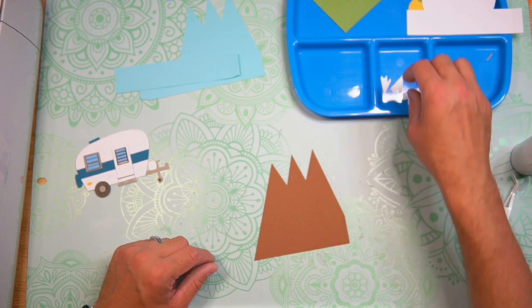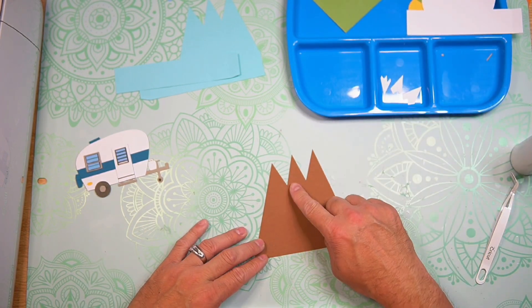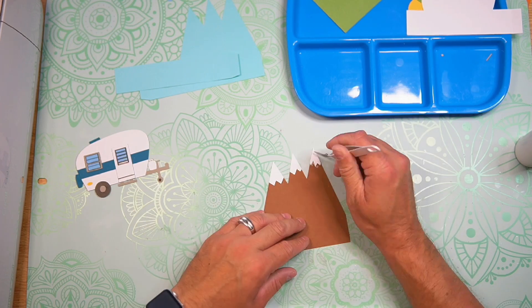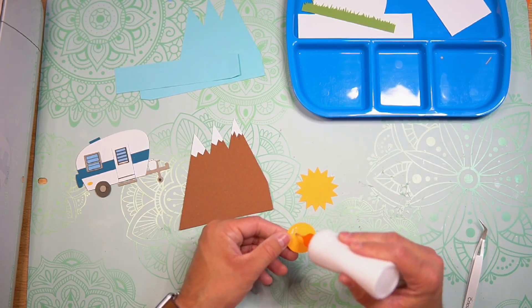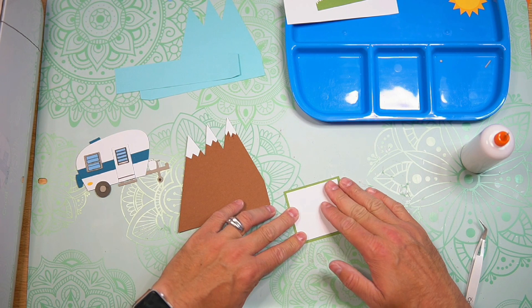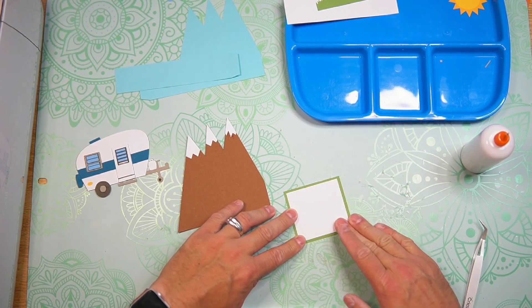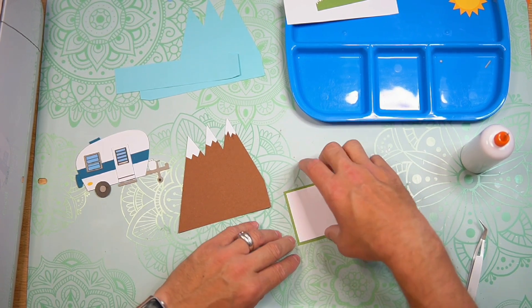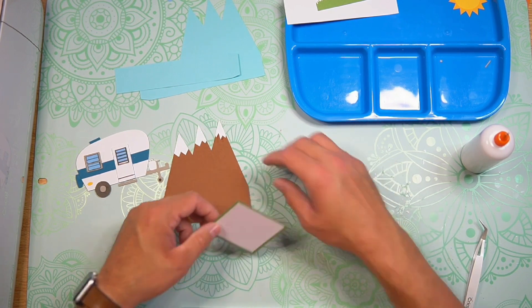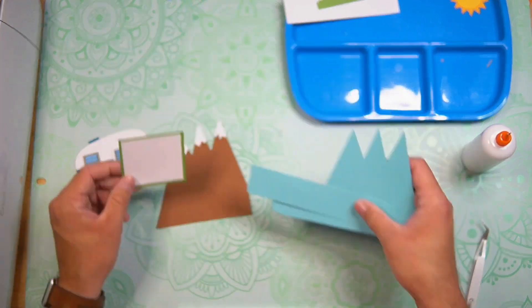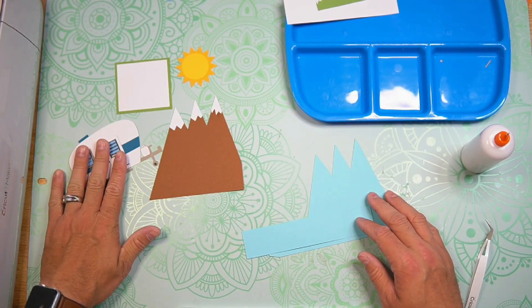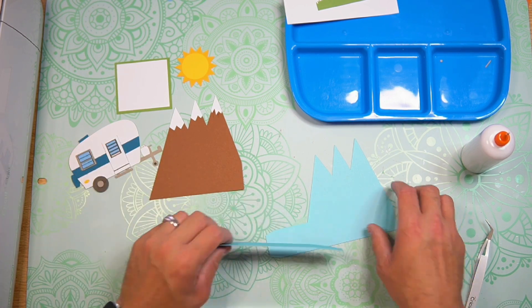Now we can go ahead and layer our little mountaintops onto our mountains. And now I'm going to go ahead and layer the sun together. And finally, I'm going to matte and layer the messaging panel. Okay, we can go ahead and let all that stuff dry. I'm going to go ahead and work on the box now.